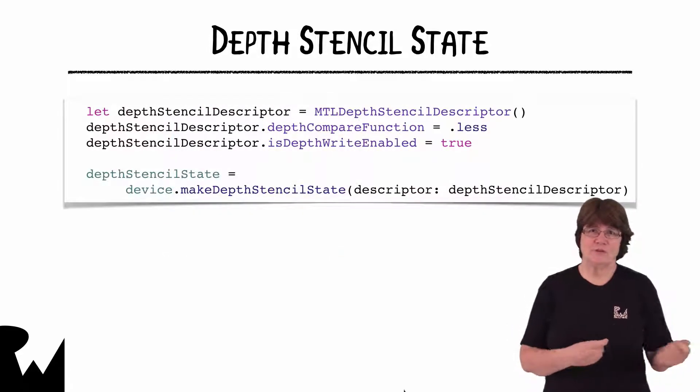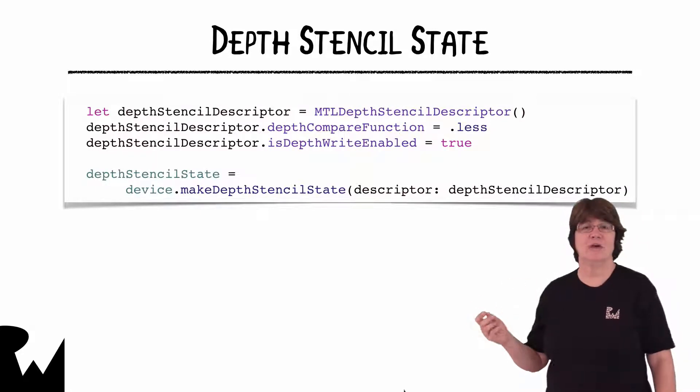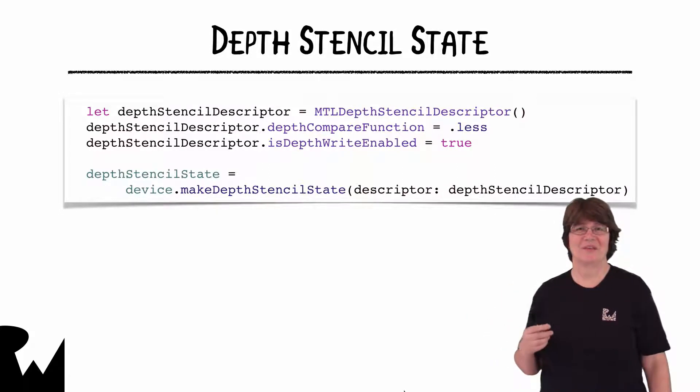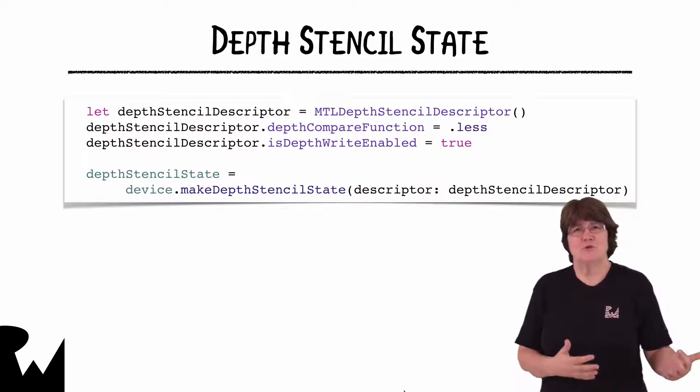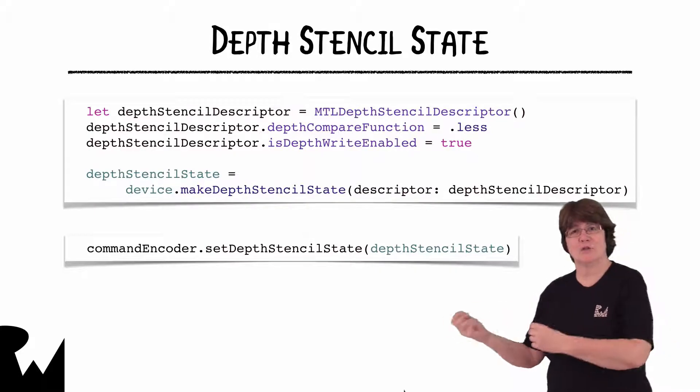We create the depth stencil state using a descriptor. When the depth compare function is set less, any fragments further away are discarded. We record the depth value for testing against other fragments with is depth right enabled. Before doing the draw call, we set the command encoders depth stencil state, which is passed along the pipeline.